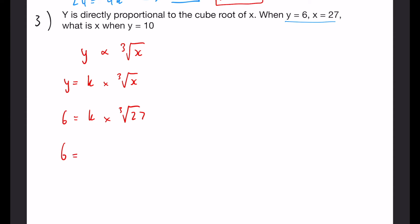So we know that 6 equals k multiplied by the cube root of 27 is 3 so 6 equals 3k so k must be 2.